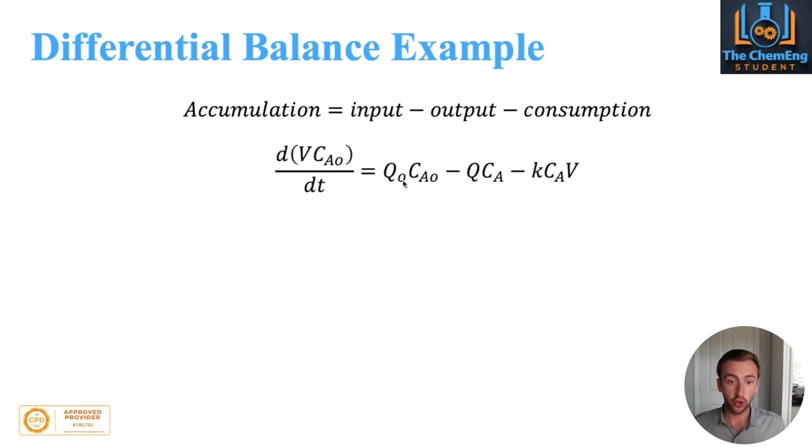Our Q₀ and Q will remain the same, they're volumetric flows, but we will now have our C_A₀ which is the inlet concentration and C_A which is the final concentration. Then our consumption will be the reaction rate which is kC_A multiplied by the volume V.